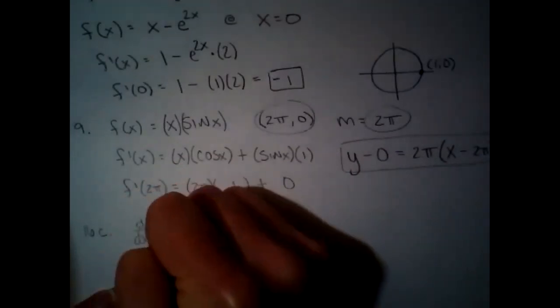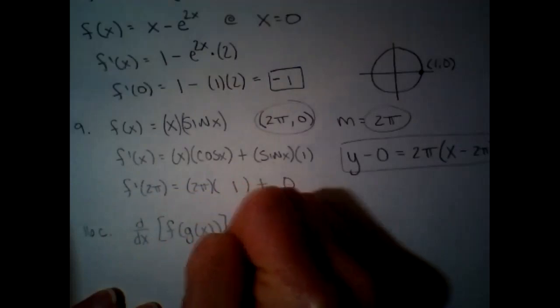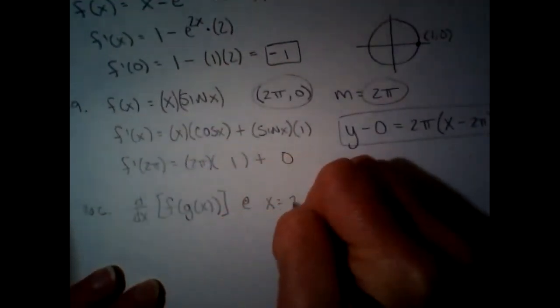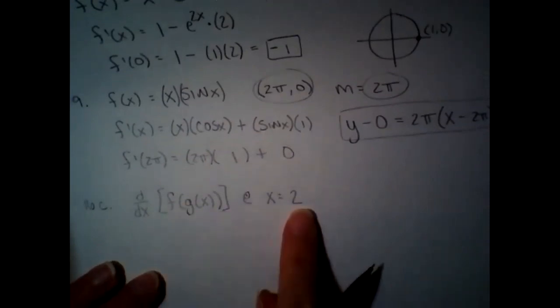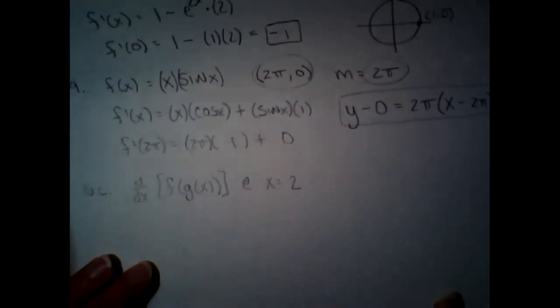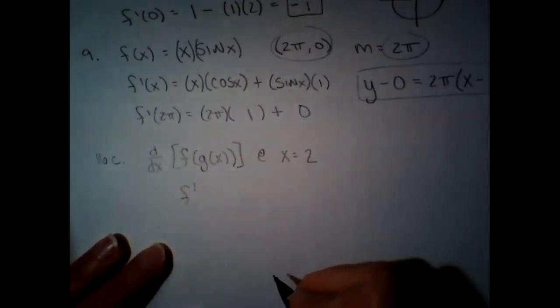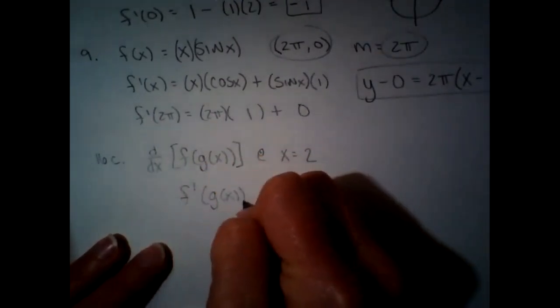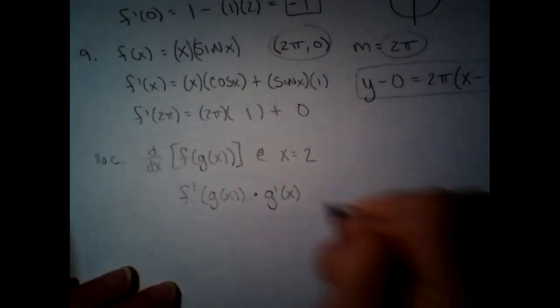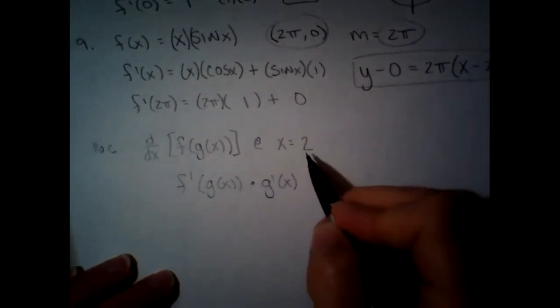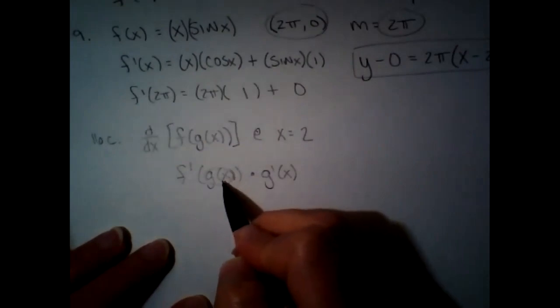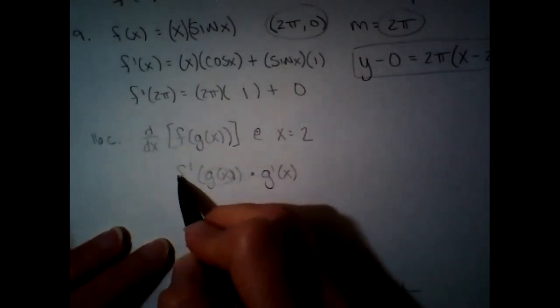The last one I want to go over is 16c — find the derivative of f(g(x)) at x equals two. We're going to write out the chain rule and then evaluate it at two using the chart. Since this is a composite function, it's going to be chain rule: derivative of the outside, leave the inside alone, then chain on the derivative of the inside. We evaluate at two by doing g(2) first, and g of two is three.